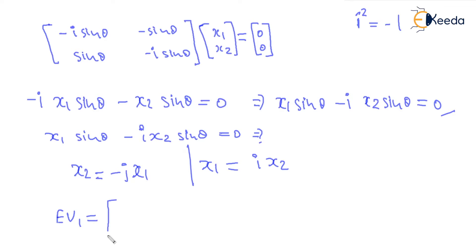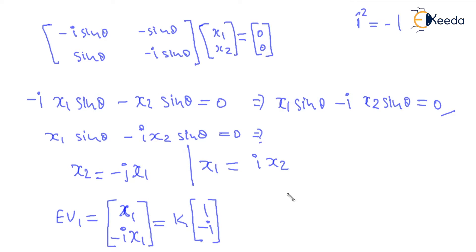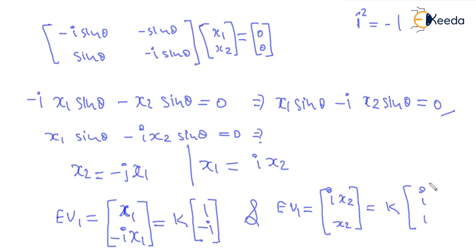The eigenvector can be written as x1 and minus j x1, which is k times [1, minus j]. It can also be written as k times [j, 1] in terms of x2. These representations are the same — multiplying by the complex factor i just rescales the eigenvector. They are not different; it is just a representation in terms of the complex number j.